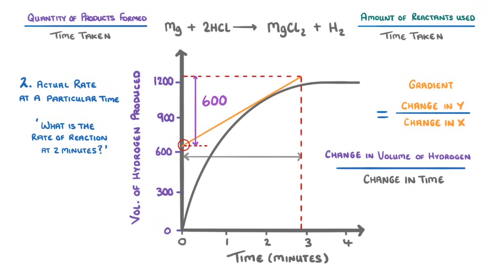and this section here would be the change in time, which is about 2 minutes 50 seconds, or 170 seconds. So we just do 600 divided by 170 to give us 3.53 cm³ per second as our rate.